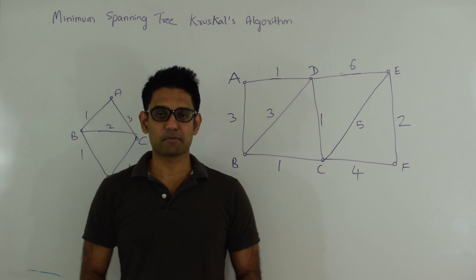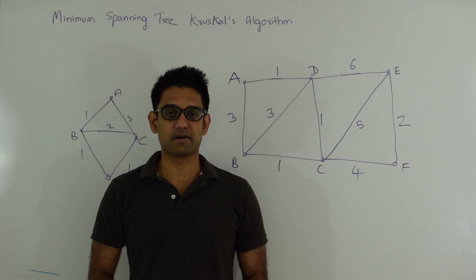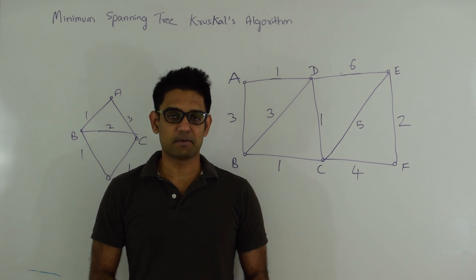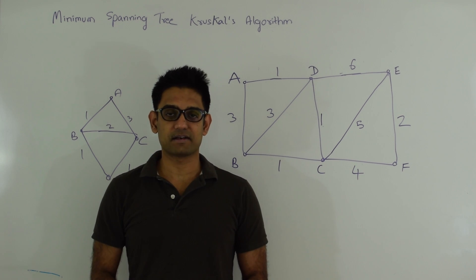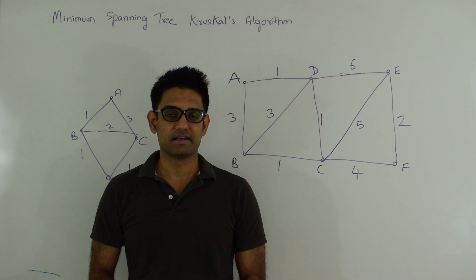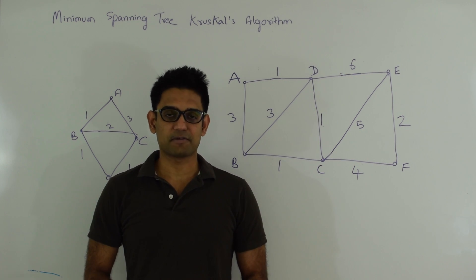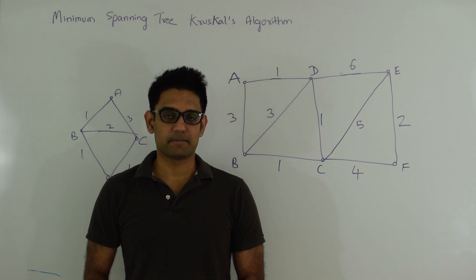What is a minimum spanning tree of a weighted undirected graph? A minimum spanning tree is a spanning tree such that the sum of the weight of the edges is minimum.